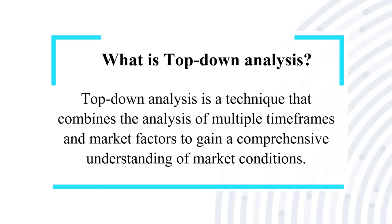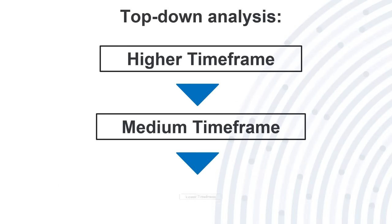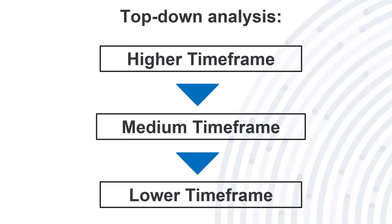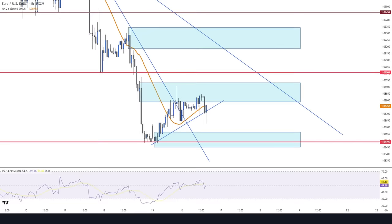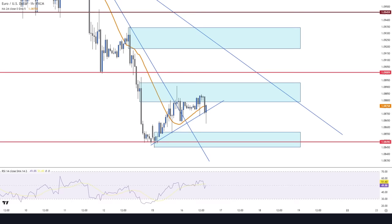So, what is top-down analysis? Top-down analysis is a technique that combines the analysis of multiple timeframes and market factors to gain a comprehensive understanding of market conditions. Starting from higher timeframes and zooming into lower details allows us to get a major view of market direction and key areas at all levels. But remember, starting from the monthly timeframe and applying every single concept out there will make your chart look completely useless by the time you reach your entry timeframe. This video will teach you exactly what to look for in each timeframe to make a well-educated analysis of any chart easily.